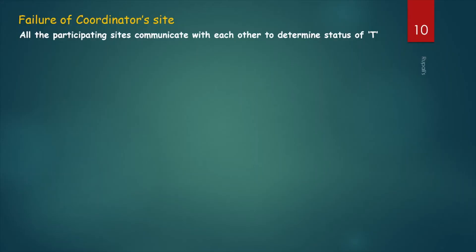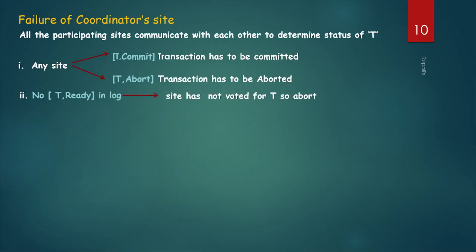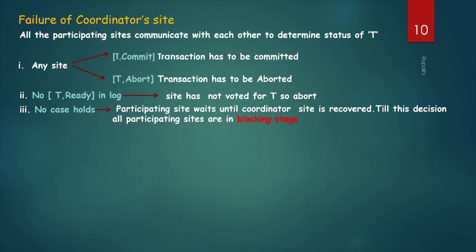Failure of the coordinator site: if the coordinator site fails, all participating sites communicate with each other to determine the status of transaction T. If any site has the message T-commit, the transaction has to be committed. If any site has the message T-abort, the transaction has to be aborted. But if no site has T-commit, T-abort, or T-ready, participating sites wait until the coordinator site is recovered. Until this decision, all participating sites are in a blocking stage.